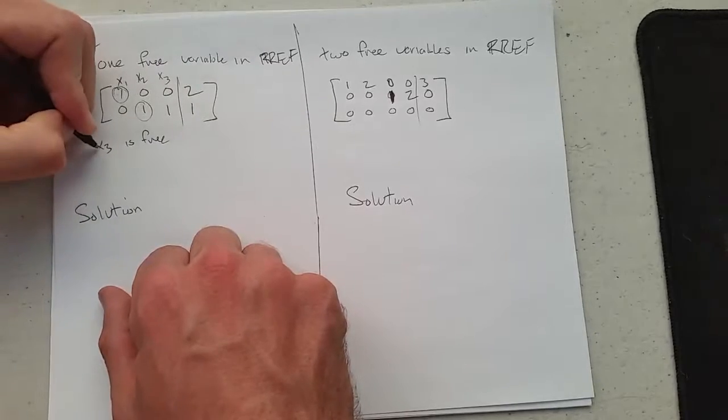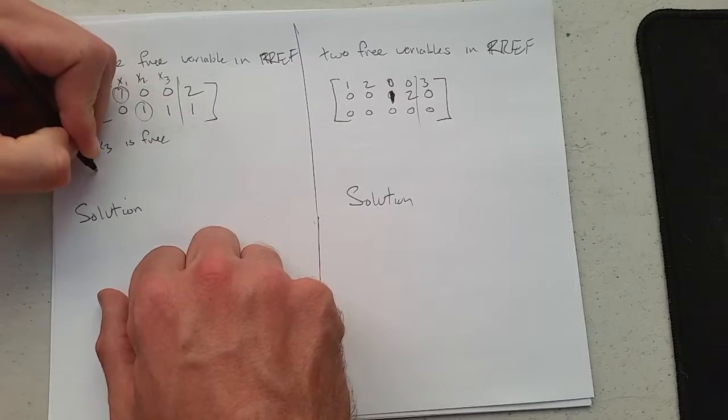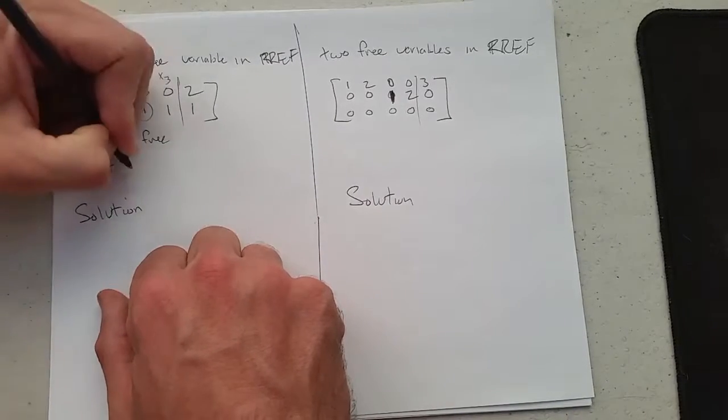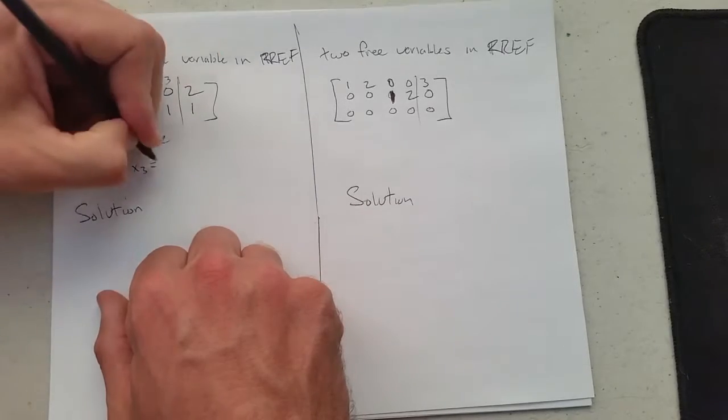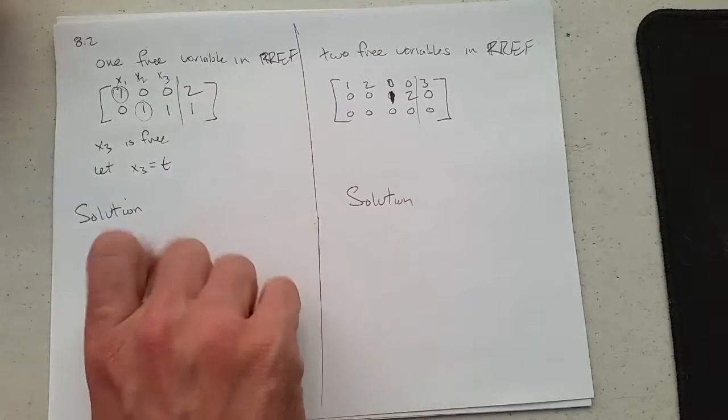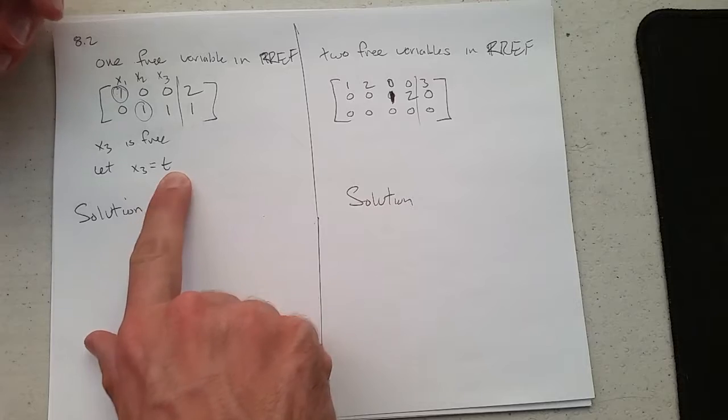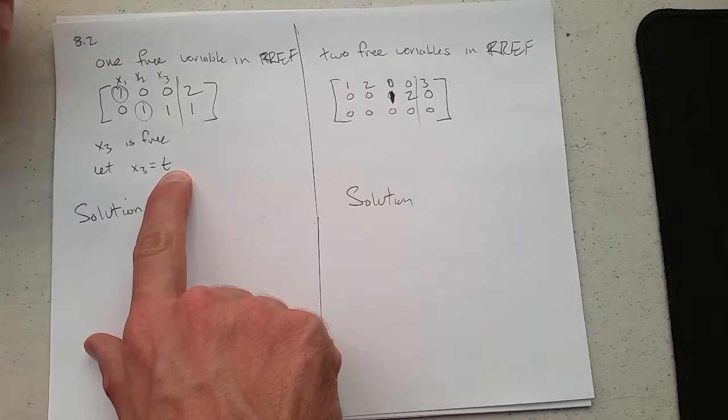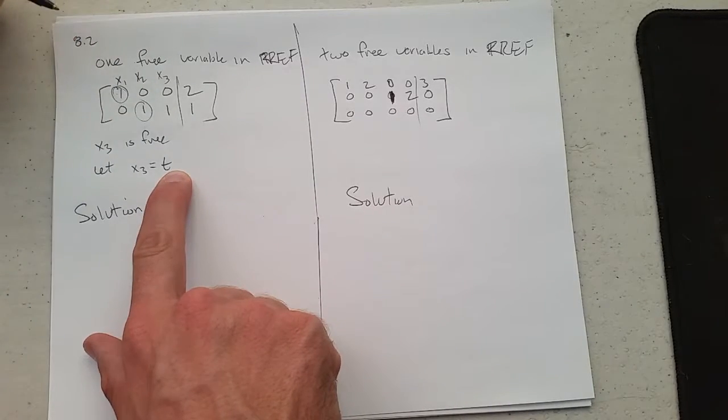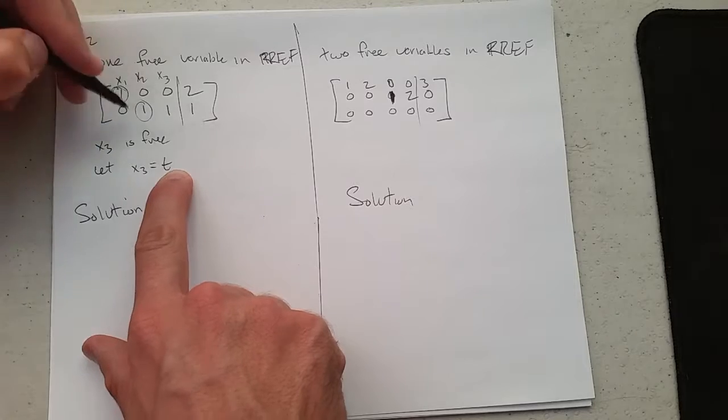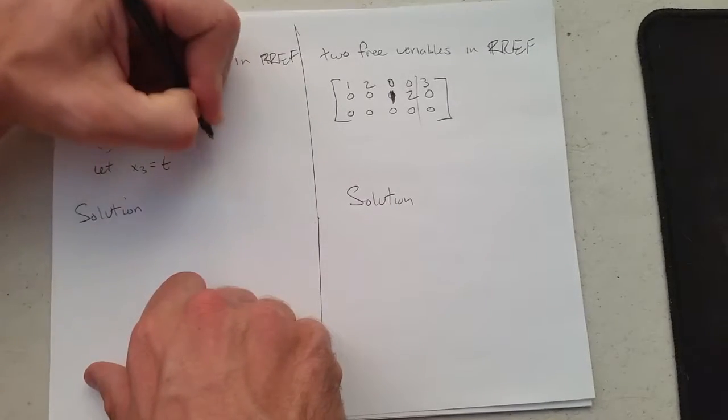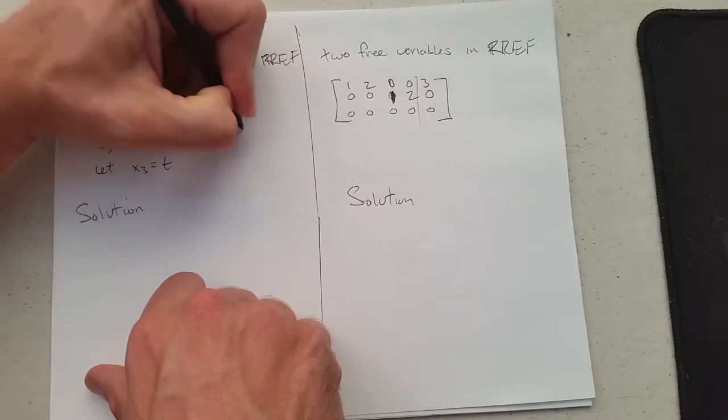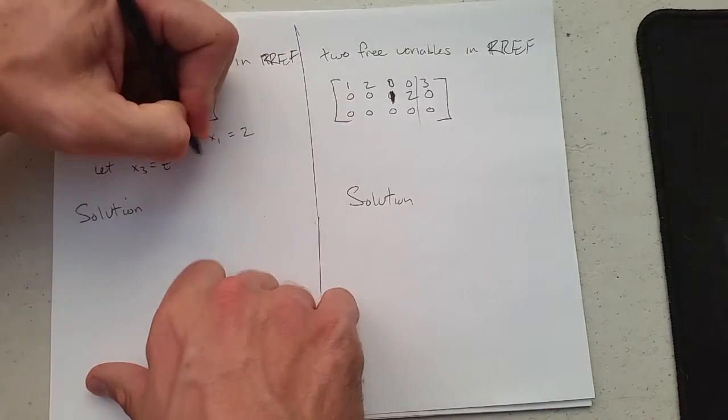x3 is free. We're going to use letters s and t. So I'm going to let x3 equal t. Make sure your t doesn't look like a plus. I put a foot on it. Now, so x3 is t. I'm going to rewrite these equations. So the first one's really nice to write. x1 equals 2. There's really not much going on there.